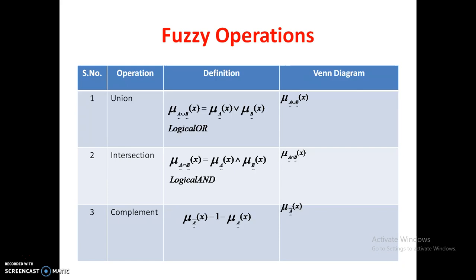Mu A of x is the membership value for fuzzy set A, and mu B of x is the membership value for fuzzy set B for the xth point. We need to identify the maximum of these two — that will be A union B. Similarly for A intersection B, we need to find the minimum value out of mu A of x and mu B of x.